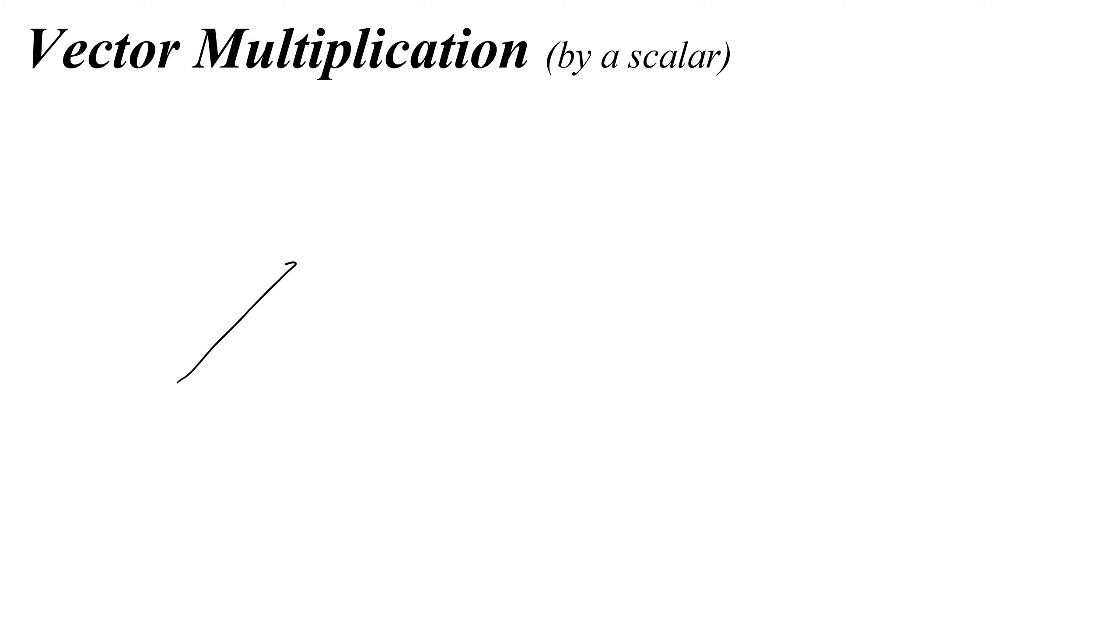So imagine you have some vector a with a magnitude of a, which the length of the arrow represents, and some angle theta. What would two times that vector look like, or twice that vector be?